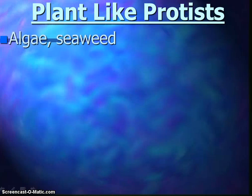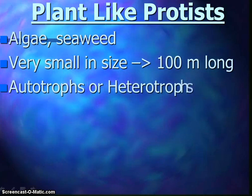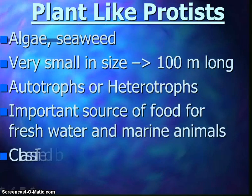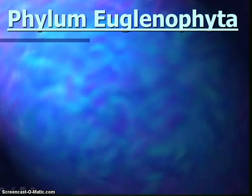Let's first talk about the plant-like protists. Our examples are algae and seaweed. They range from small sizes barely noticeable to as long as 100 meters like seaweed. They are autotrophs or heterotrophs and are a big source of food for freshwater and marine animals. We classify them according to their color and structure — the color comes from their pigments, giving us green algae, red algae, golden algae, and so forth. Plant-like protists first appeared on Earth about 550 million years ago, and half of all photosynthetic production of organic material is achieved by algae.